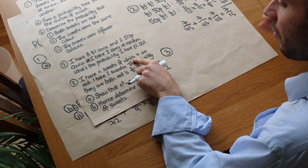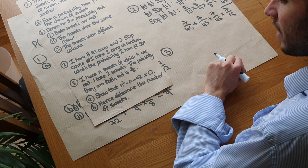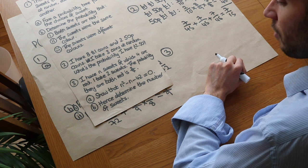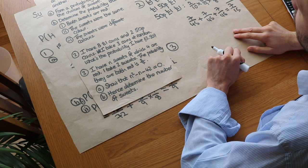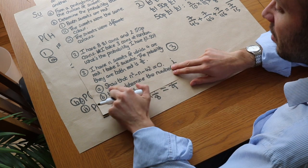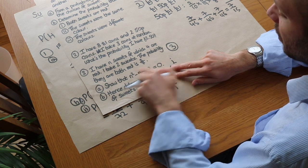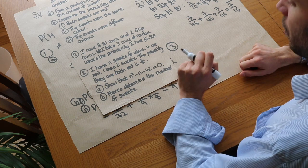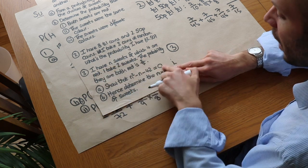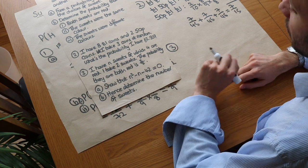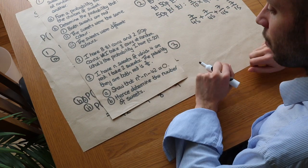We have n sweets, of which four are red. I take two sweets. The probability that both are red is two sevenths. We must show that n² − n − 42 = 0. Note: 'show that' means use the given information to derive this equation — not simply solve it.